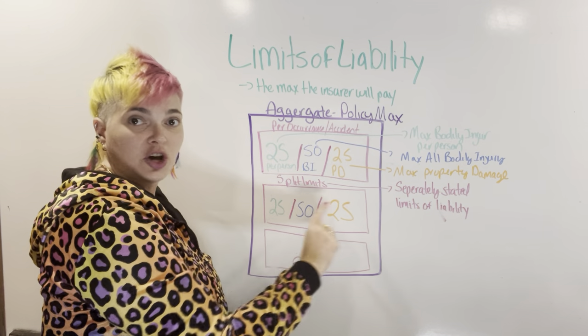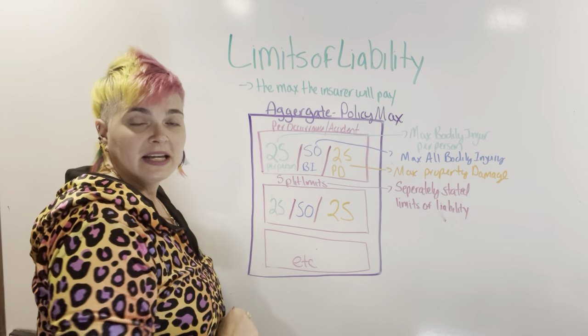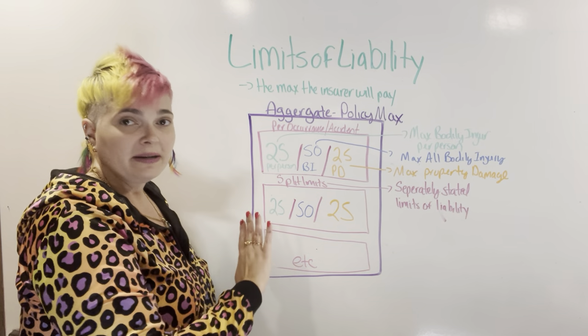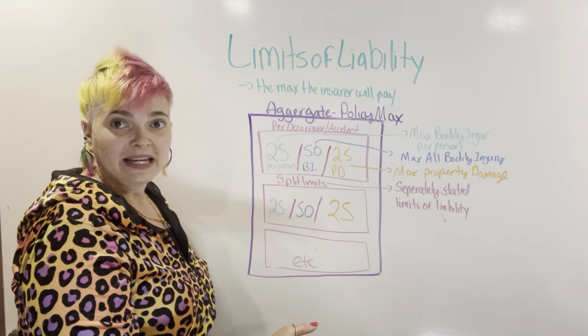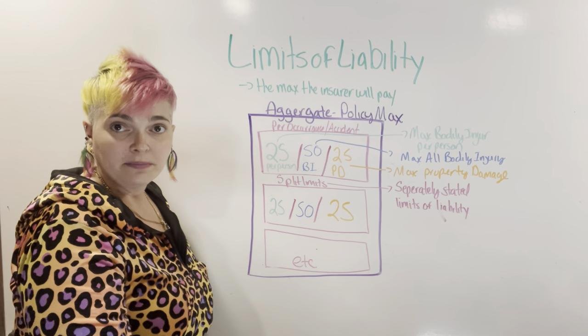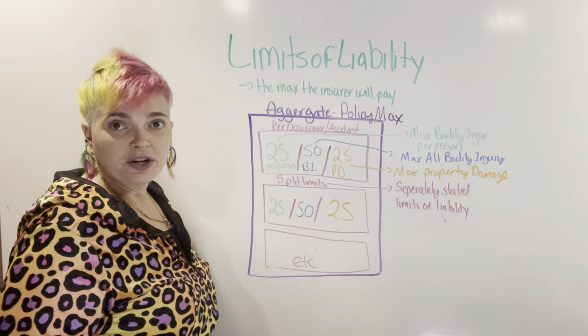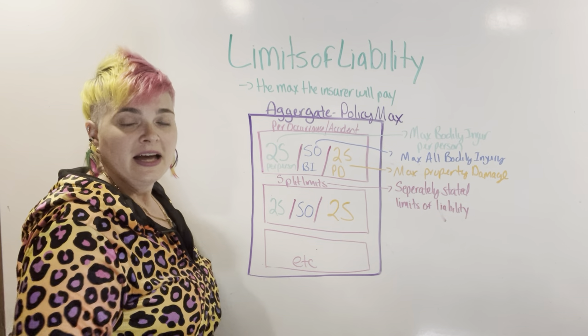You have so many of those per occurrence limits in your policy — however many it takes to get up to a million or whatever your aggregate is.